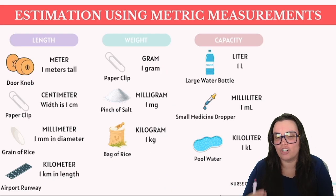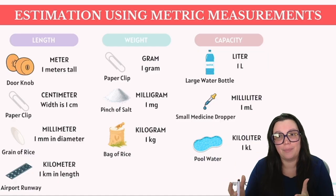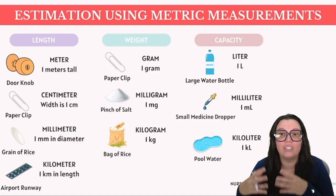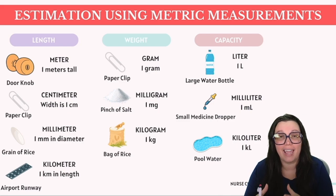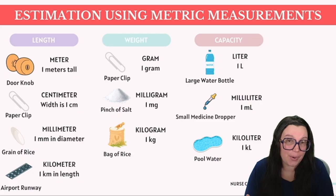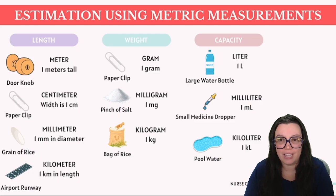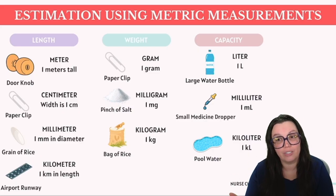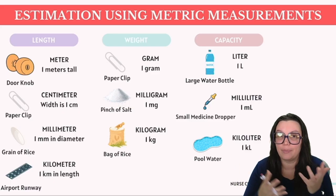So let's talk about estimation. On the ATI TEAS, you're going to have to use your best judgment in regards to length, weight, and capacity when it comes to various items. Starting with estimation involving length, you're going to be using metric system conversions — a crucial skill for the ATI TEAS as well as healthcare. I highly recommend you check out my video on metric conversions because it's going to help you break down the differences between each unit.